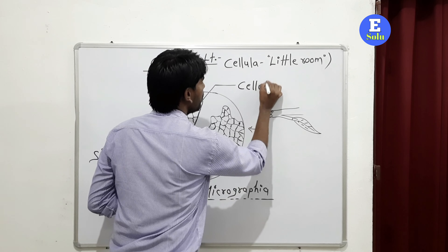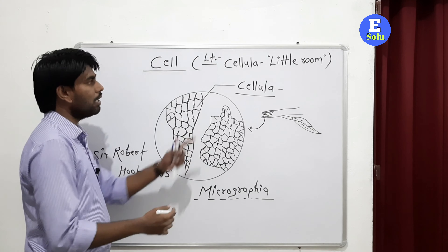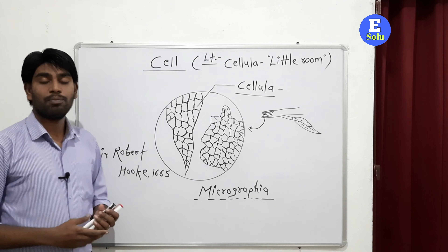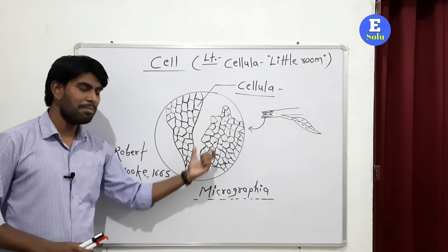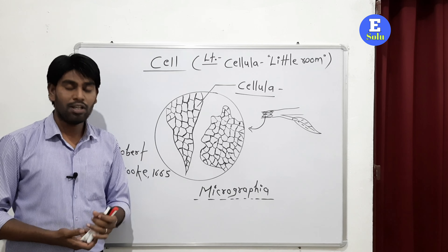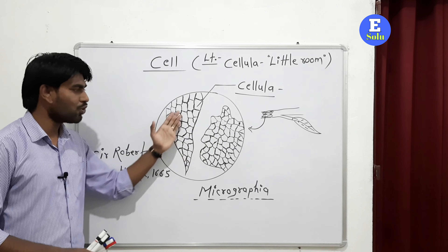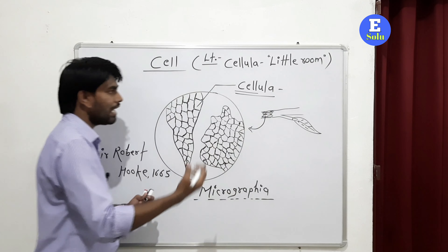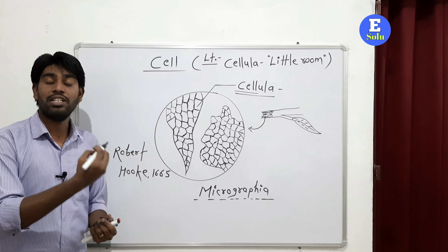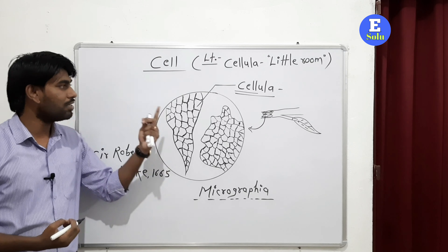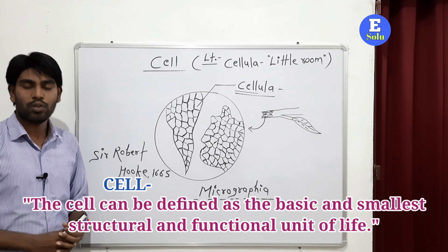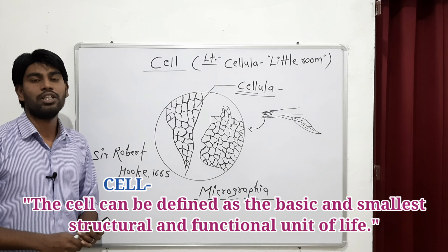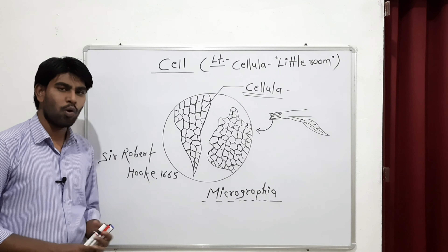He said 'cellula,' meaning a little room or small compartment. Sir Robert Hooke described that these chambers just look like cellula — the small rooms in which monks or people doing religious practice used to stay. From this Latin word 'cellula,' the word 'cell' came about. That means the word 'cell' is derived from the word 'cellula,' and the cell is known as the basic fundamental unit of life. The cell can be defined as the basic and smallest structural and functional unit of life.